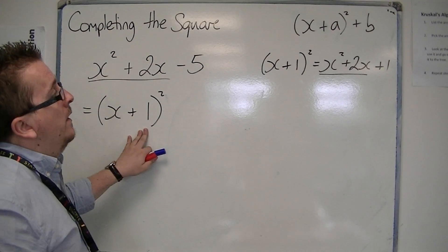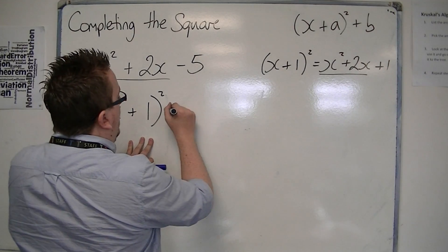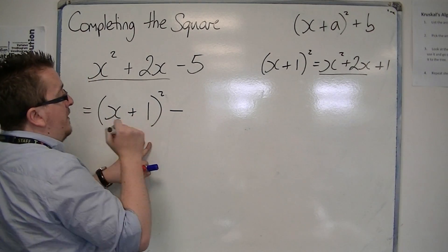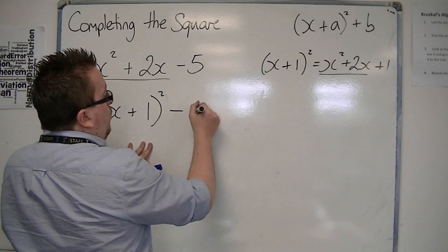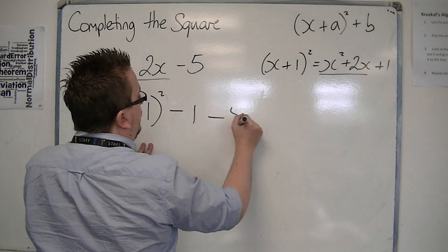Whatever that number is, taking it away, having squared the number. So 1² is just 1, and then having the -5 on the outside.